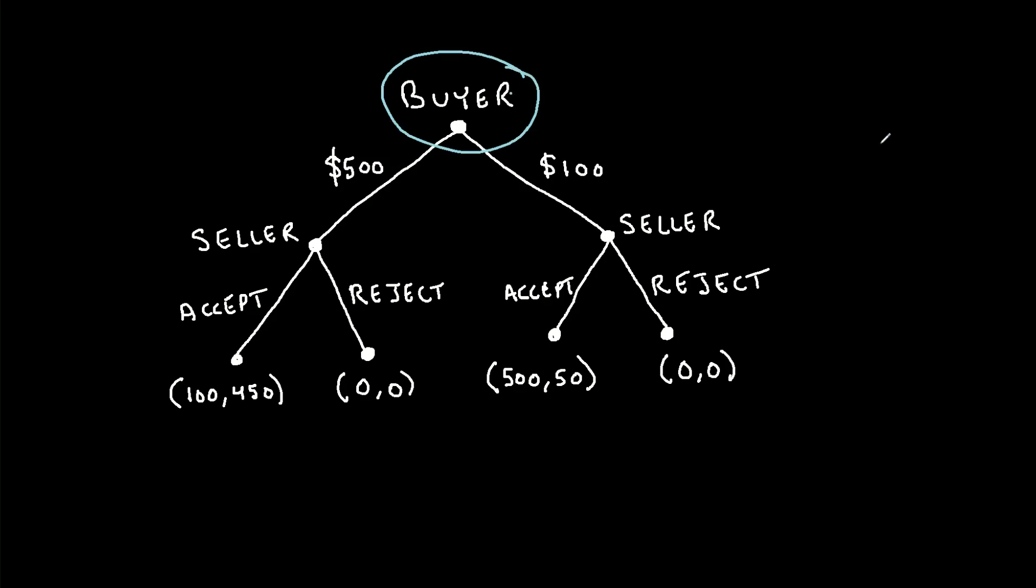Now, the buyer has a decision to make. They can either offer $500 for the product, or they could offer $100 for the product. Now, once the seller receives the offer, they can either decide to accept the offer or reject it. So for this particular game, I've listed the payoffs for both the buyer and the seller.